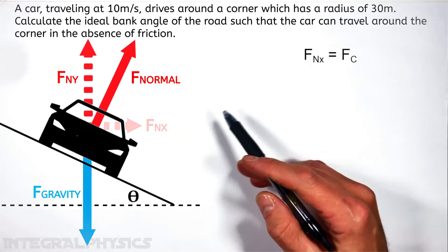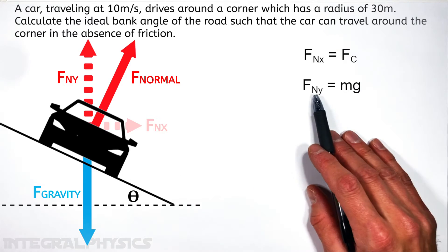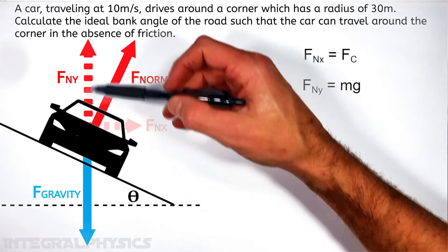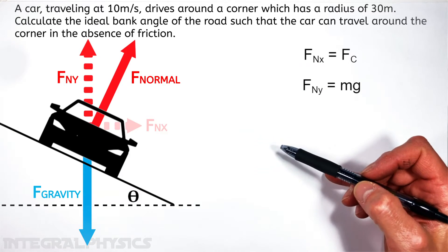Now vertically we can say that Fn in the y-axis is equal to the weight of the car, mg. This has to be true otherwise our car would accelerate vertically. And this isn't a rocket, it's a car going around a horizontal corner.